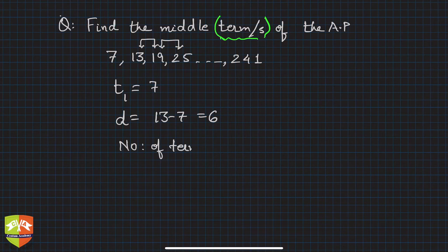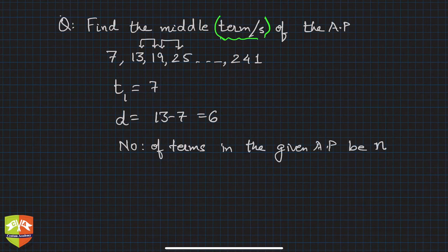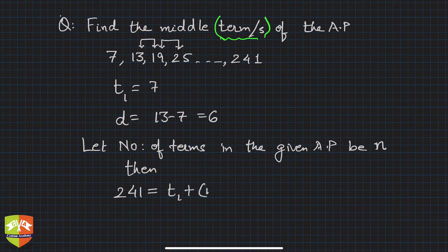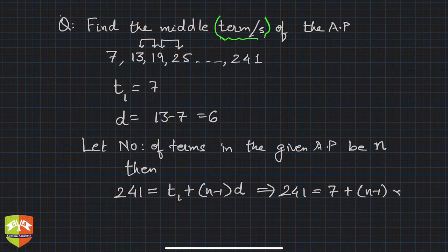Let number of terms in the given AP be n. Then the last term will be the nth term. In this case, what is last term? 241. So 241 can be written as t1 plus n minus 1 times d. So 241 equals 7 plus n minus 1 times 6.